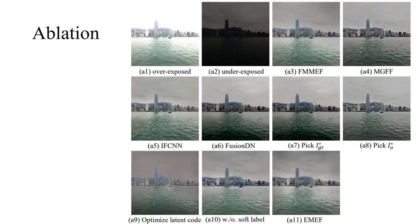In sample A, MGFF and Fusion DN fail to brighten the dark regions in the sea, while FMMEF and IFCNN don't recover more details in the sky compared with ours. The method of optimizing latent code jumps out of the pre-train space which introduces severe color distortion. And the method without soft label brings artifacts in the boat region.